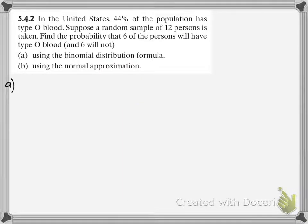In the United States, 44% of the population has type O blood. Suppose a random sample of 12 people are taken, find the probability that 6 of the people will have type O blood and 6 will not. So, we're going to be using a binomial distribution formula to figure this out.